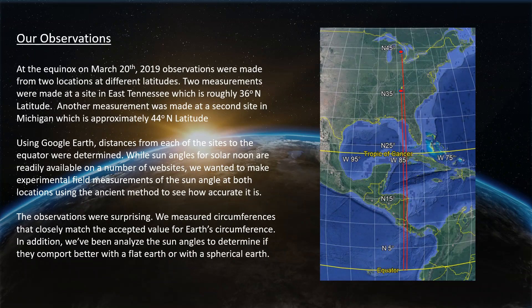We wanted to make some observations and duplicate Eratosthenes' method of doing this. I wanted to do it at two different latitudes. So I solicited some help out of Bob the Science Guy, and I made measurements here in East Tennessee at a latitude of about 36 degrees north. Bob made his measurements in northern Michigan at about 45 degrees, 44 degrees north latitude. And of course we got our distances to the equator simply using Google Earth.